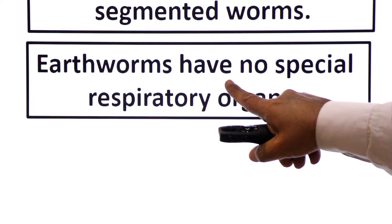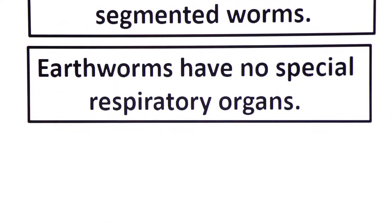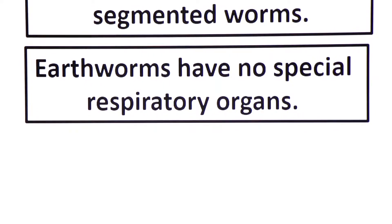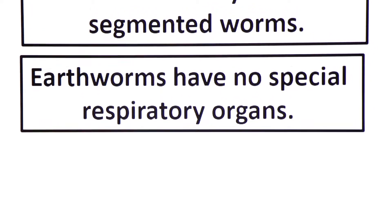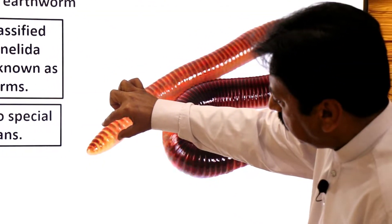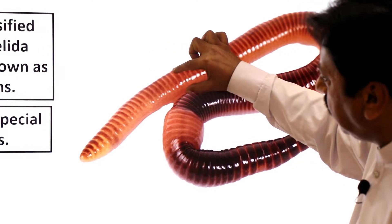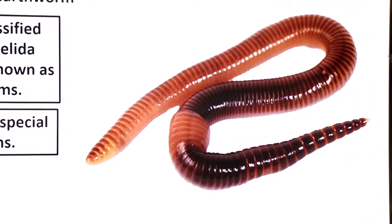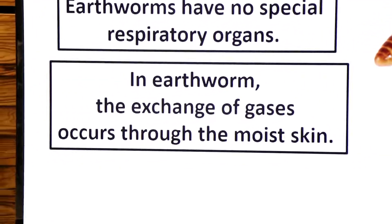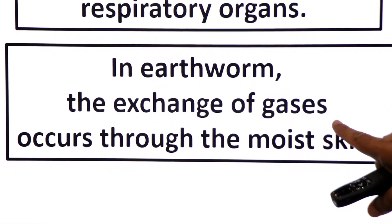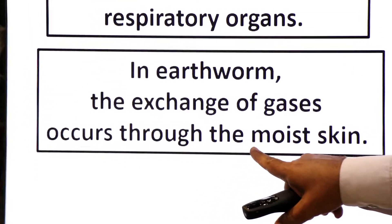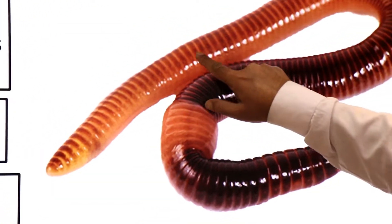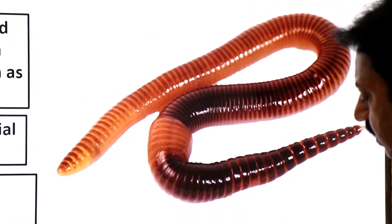Earthworms have no special respiratory organs. Earthworm ke paas koi special respiratory organs nahi hoti. Earthworm respire through its moist skin. In earthworm, the exchange of gases occurs through the moist skin, so the moist skin of the earthworm is its respiratory organ.